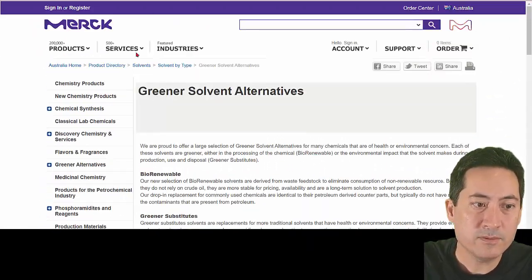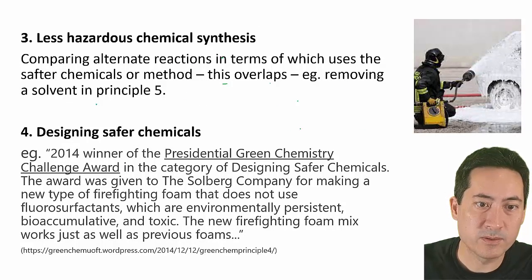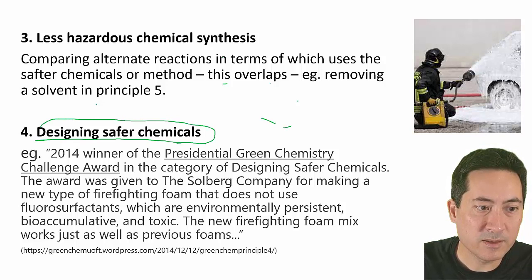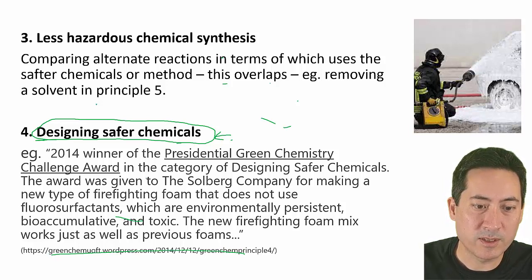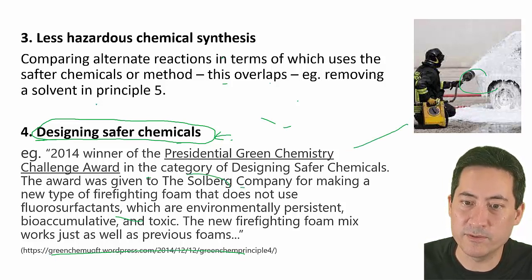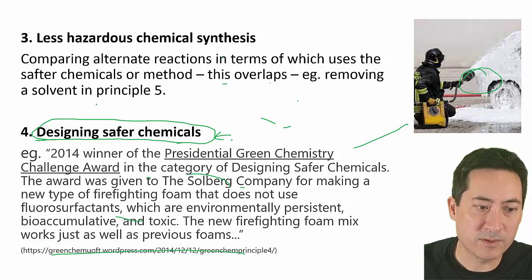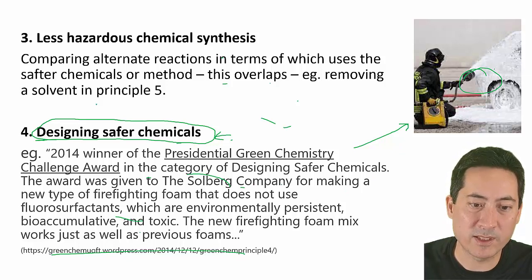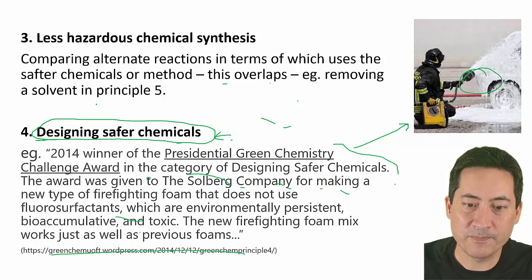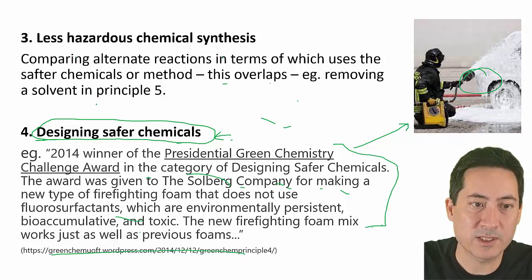Going back to principle three — using less hazardous chemicals — designing safer chemicals is harder, but you can grab safer chemicals and test whether they work just as well. For example, a company replaced a very effective but toxic, bioaccumulative fire retardant with a safer alternative that worked equally well. There are many good reasons to do this in industry, and it often saves money as well as being better for the environment.